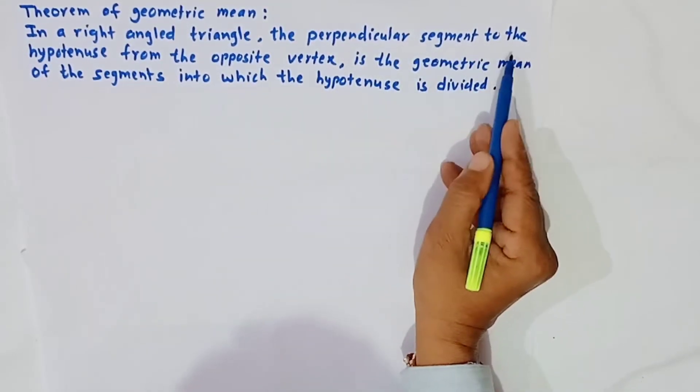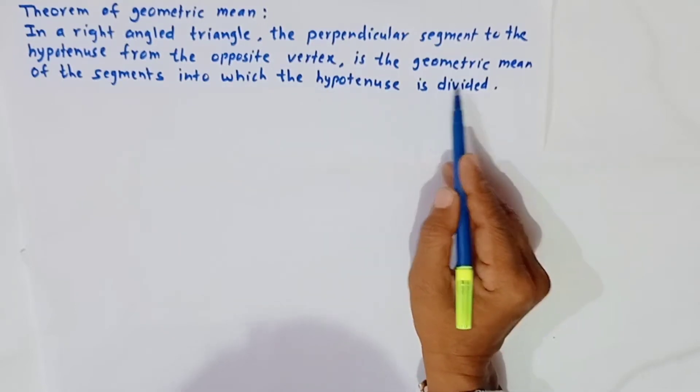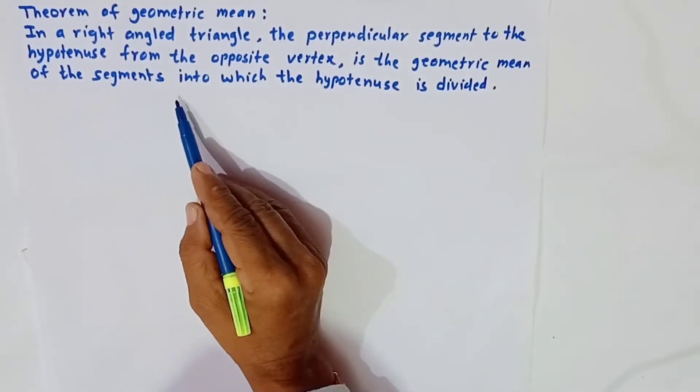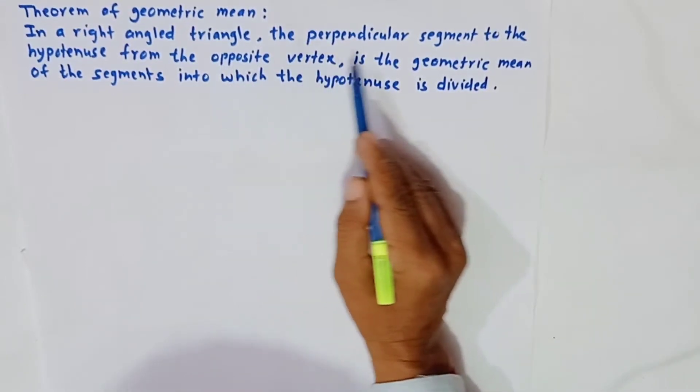the perpendicular segment to the hypotenuse from the opposite vertex is the geometric mean of the segments into which the hypotenuse is divided.